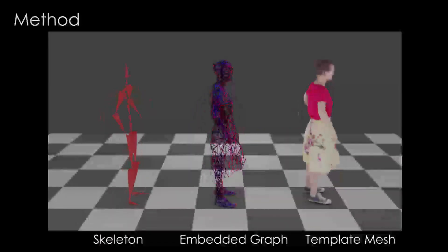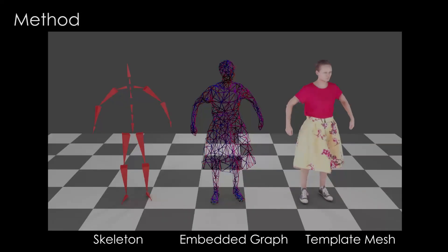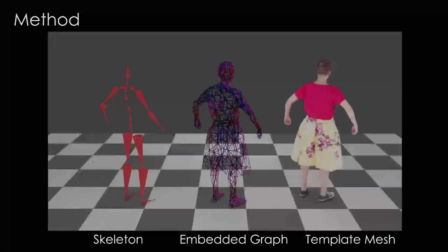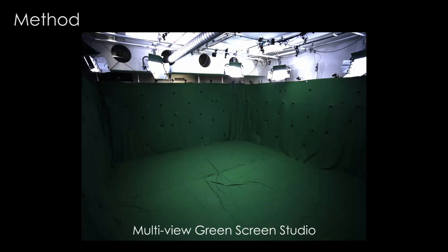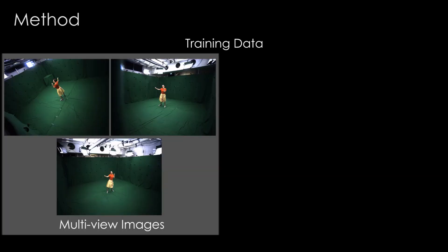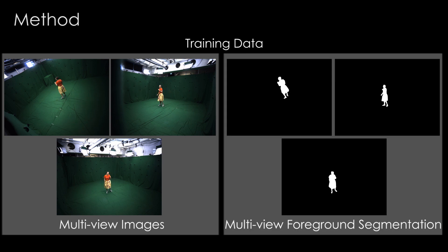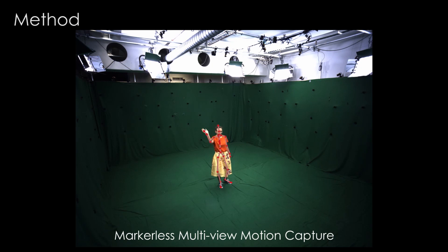Our method requires a textured 3D template of the actor. The template mesh is manually rigged to a skeleton, and we automatically compute an underlying embedded graph. For training data, we capture the subject in a multi-view green screen studio where camera calibration is available. We then ask the subject to perform various types of motions. For all frames and views, we acquire the foreground segmentation using color keying. As our method takes a motion sequence as input, we capture the motion of the actor using a multi-view markerless motion capture system.